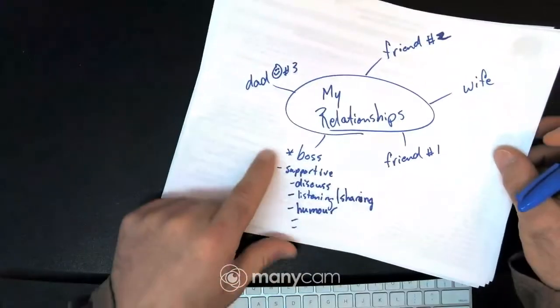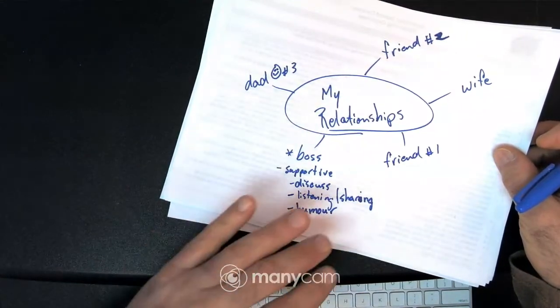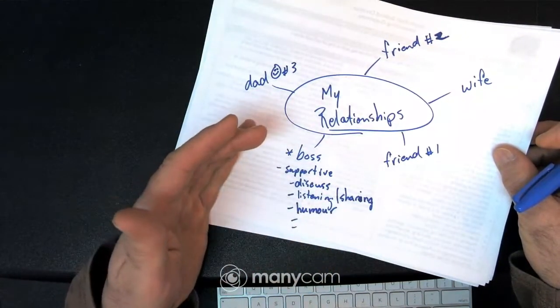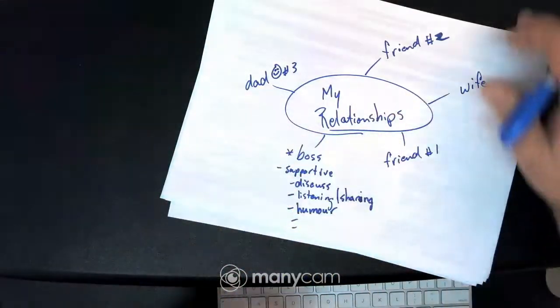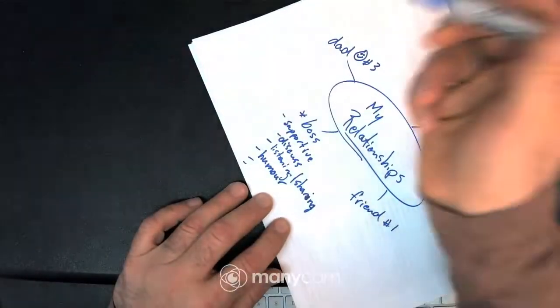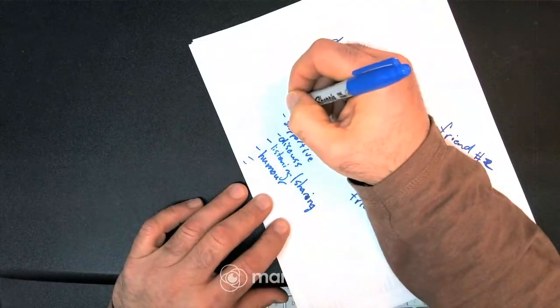Now, so far I've written all positive things here. There might also be negative things because relationships are complex. They might have positive and negative things, but I'm going to take a look at everything and then just decide whether it's a healthy or unhealthy relationship.